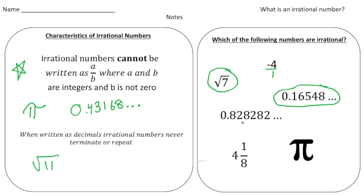Here we have the decimal 0.828282. This decimal is repeating, and because it's repeating that's rational.